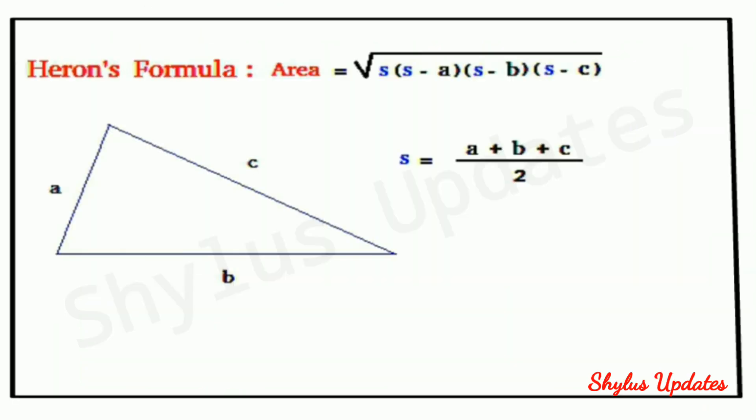Heron's formula: Area equals root of s into s minus a into s minus b into s minus c, where s equals a plus b plus c upon 2.